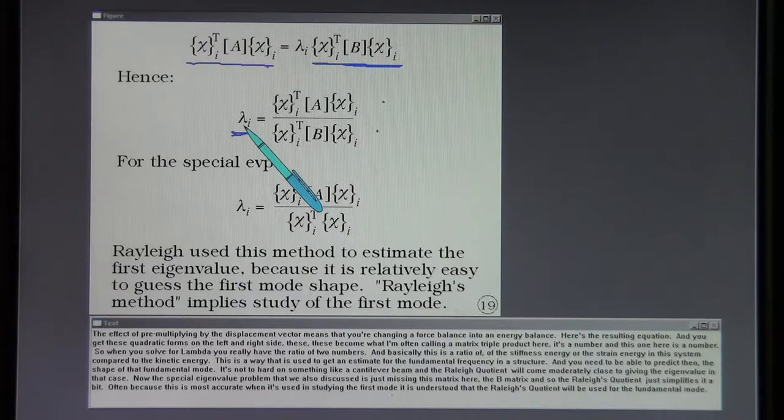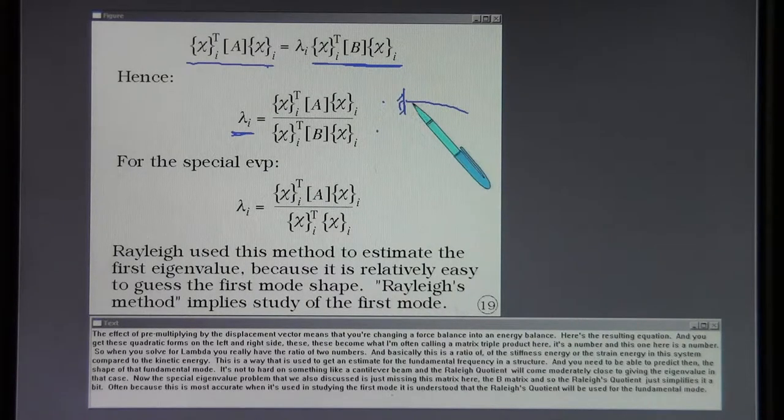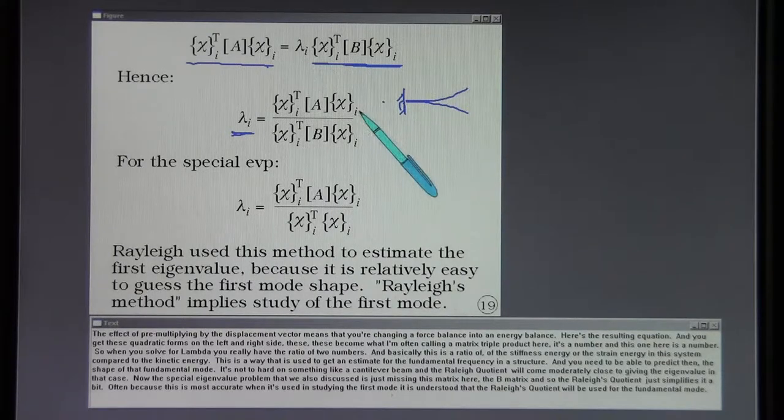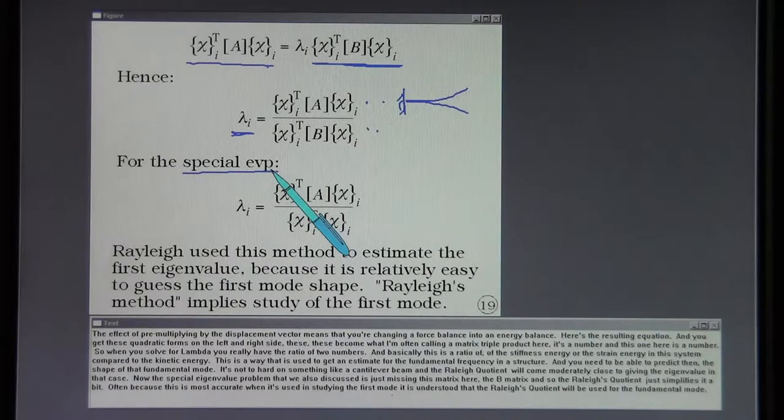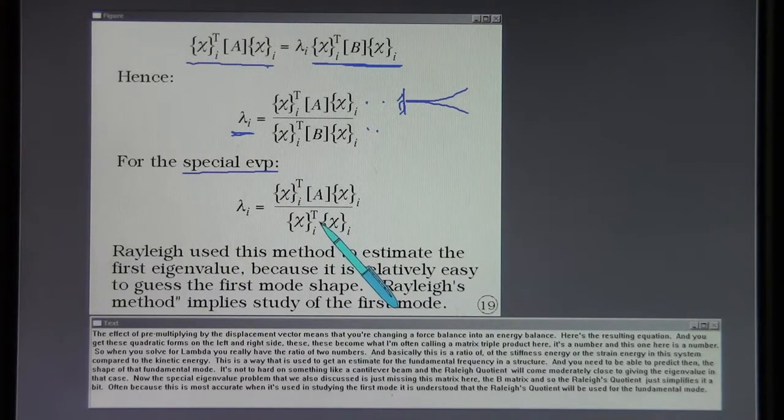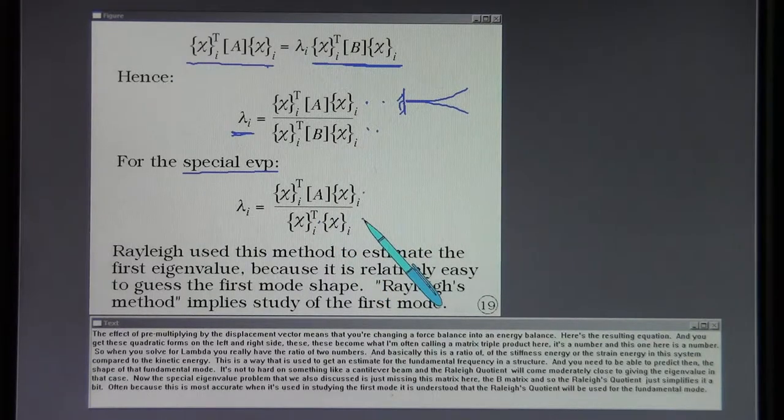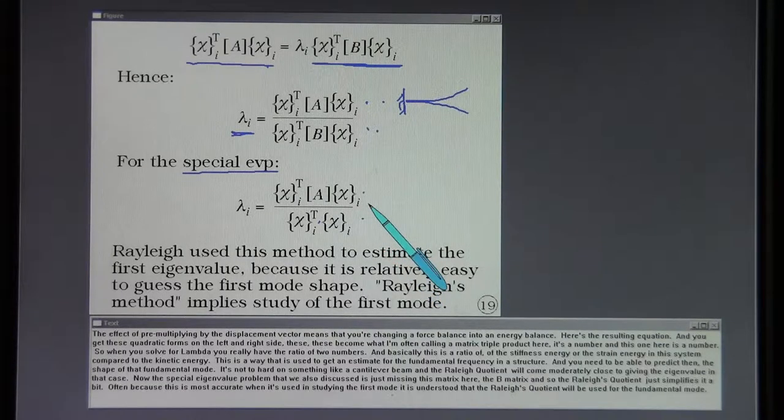This is a way that is used to get an estimate for the fundamental frequency in a structure. You need to be able to predict then the shape of that fundamental mode. That's not too hard on something like a cantilever beam. The Rayleigh quotient will come moderately close to giving the eigenvalue in that case. Now the special eigenvalue problem that we also discussed is just missing this matrix here, the B matrix. So the Rayleigh quotient just simplifies a bit. Often because this is most accurate when it's used in studying the first mode, it is understood that the Rayleigh quotient will be used for the fundamental mode.